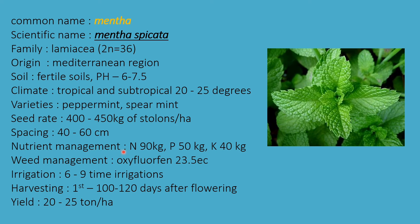Nutrient management: nitrogen 90 kg, phosphorus 50 kg, and potassium 40 kg per hectare. Weed management uses oxyfluorfen 23.5 EC emulsifiable concentrate. Irrigation: 6 to 9 times. First harvesting is 100 to 120 days after flowering, and the second harvesting is after 90 days. Yield is 20 to 25 tons per hectare.